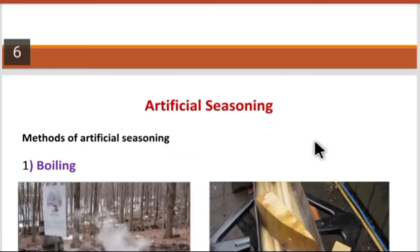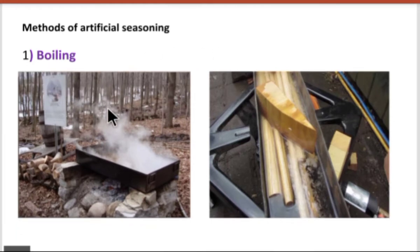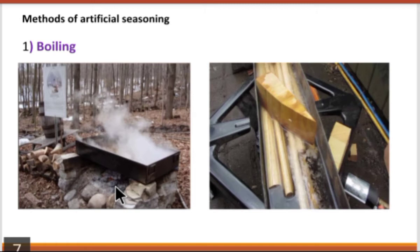Next is artificial seasoning. There are many methods for artificial seasoning. The first one is boiling. In this process, we immerse the timber into hot water, or first immerse the timber in water then boil it. Due to the boiling, the timber gets seasoned quickly. However, it is a very expensive and uneconomical process.